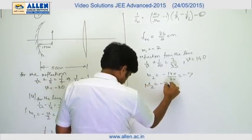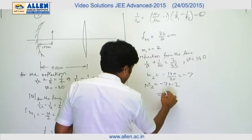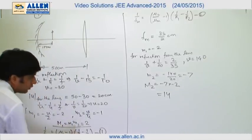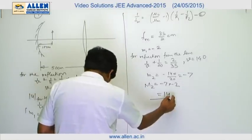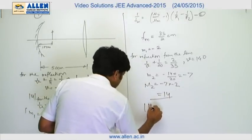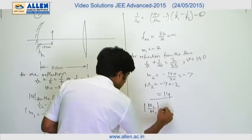Since m1 is 2 and m2 is 14, therefore ratio of m1 by m2, that is m2 by m1, equals to 7. Therefore, this is the answer.